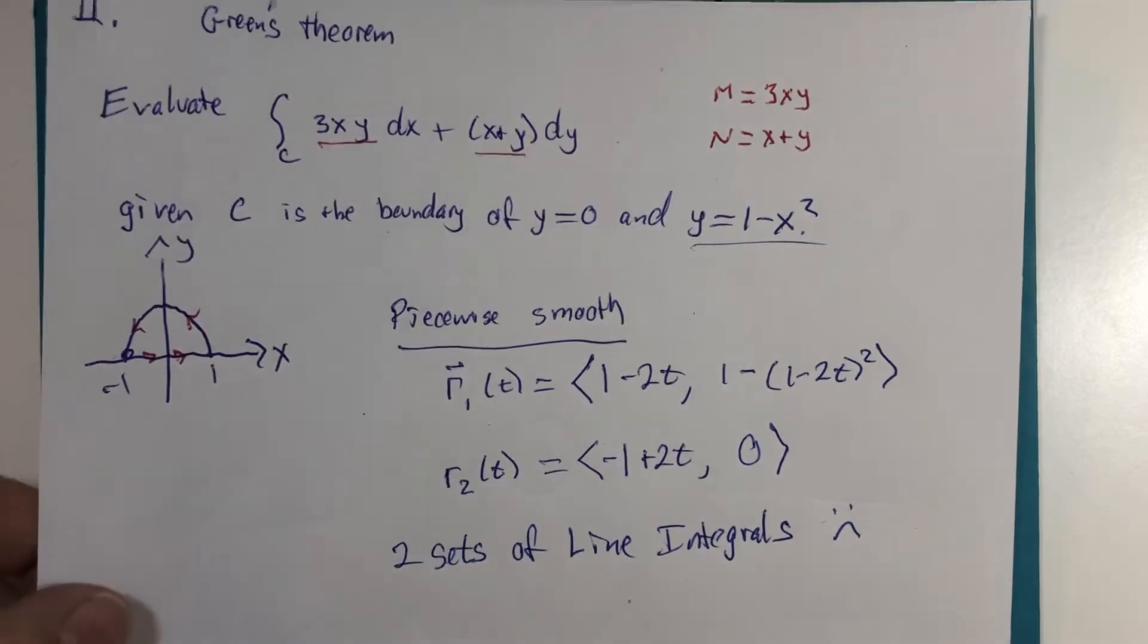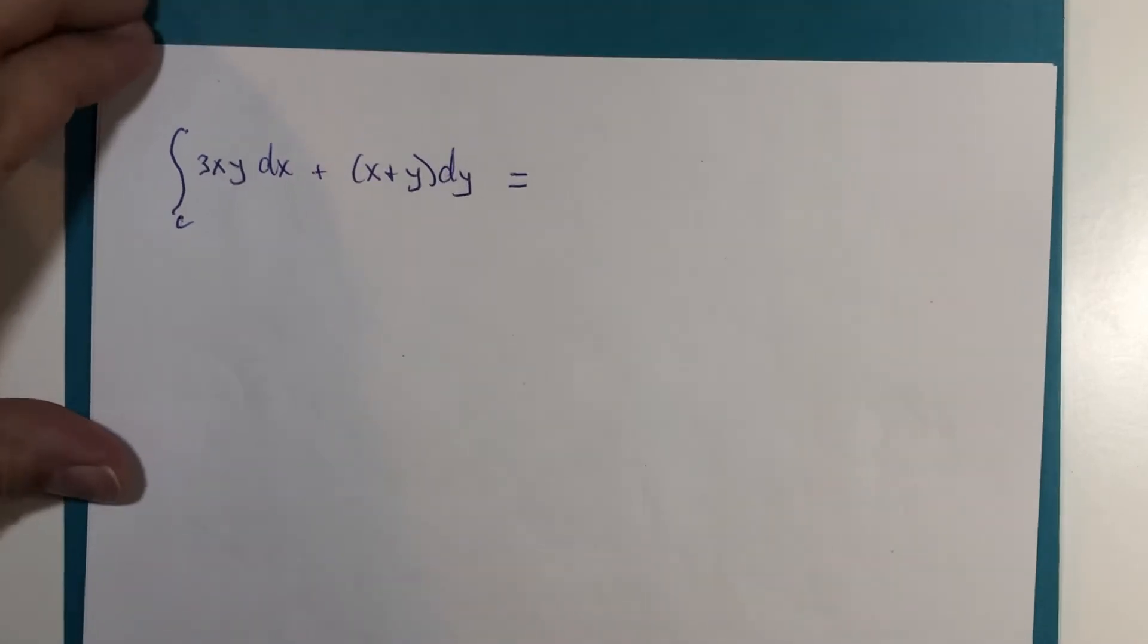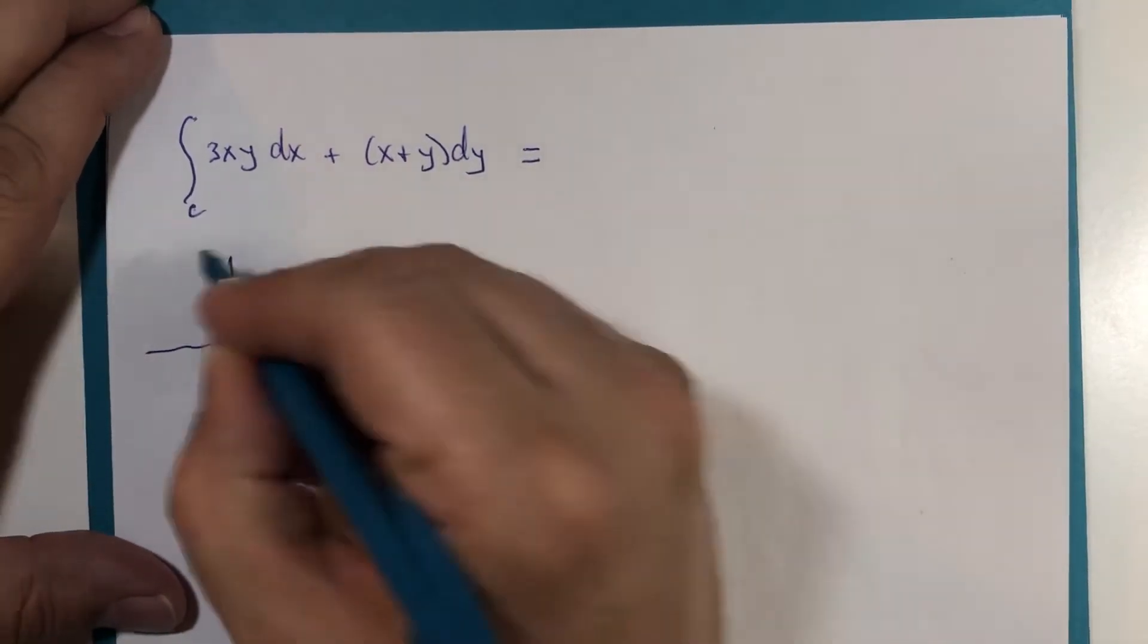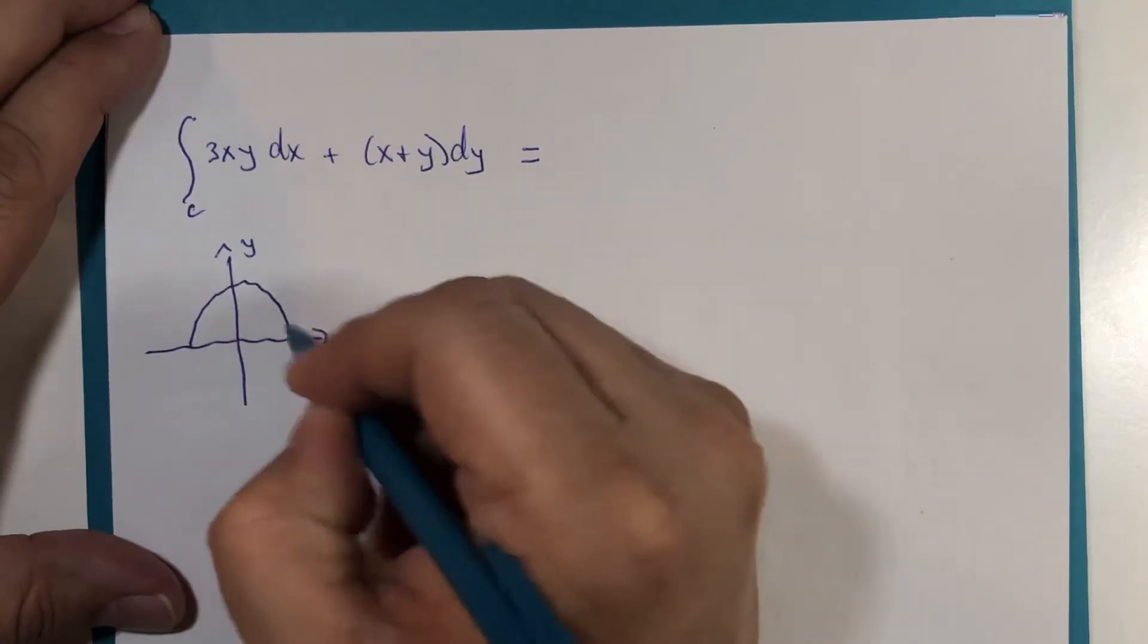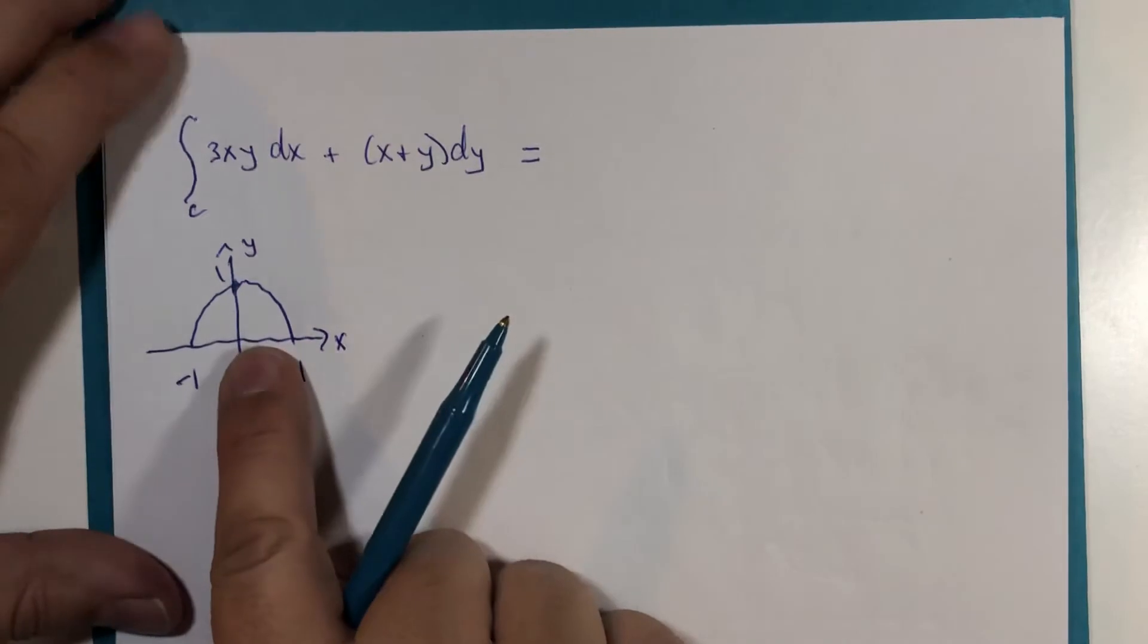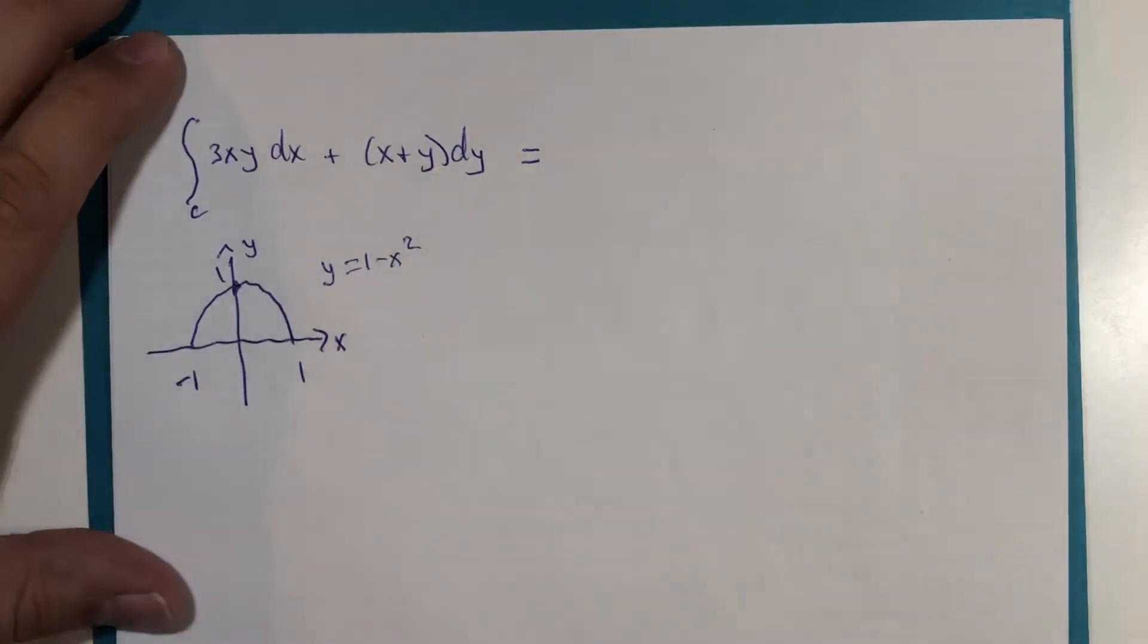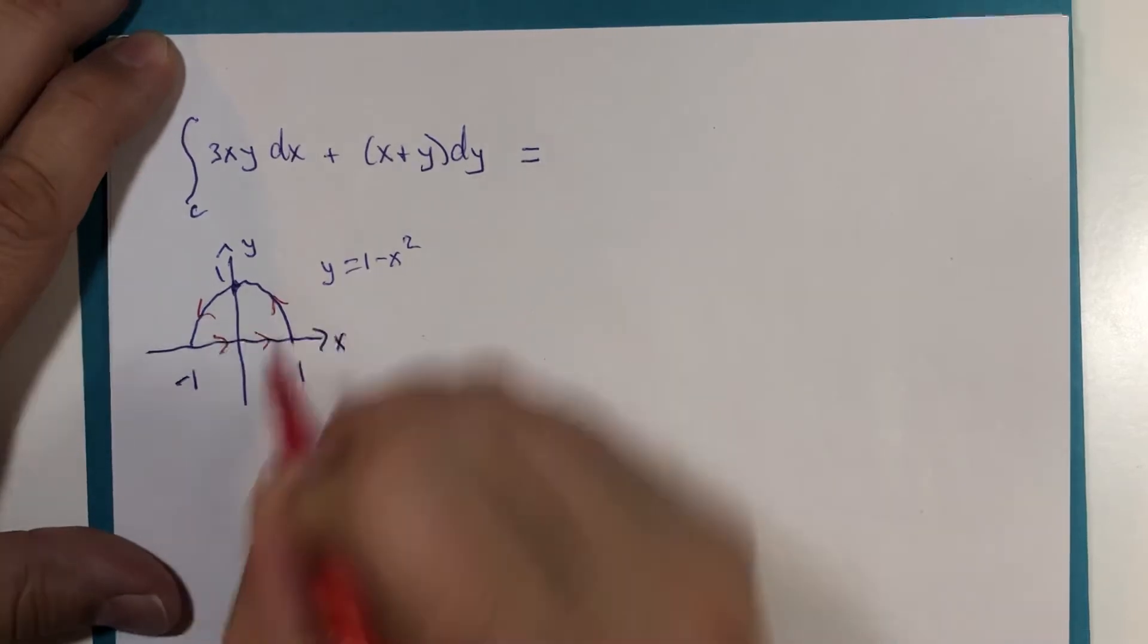So, let's look at it the way Green's Theorem could do it. We have this line integral, and we have this closed region, 1 and negative 1 and positive 1. This is not a half circle. This is a parabola. Y equals 1 minus x squared. Trace that direction counterclockwise.